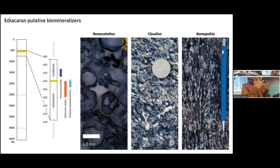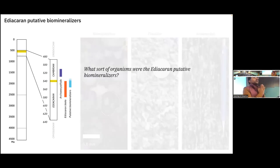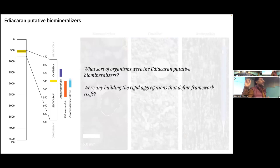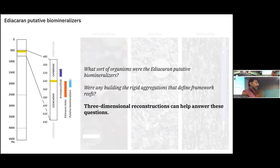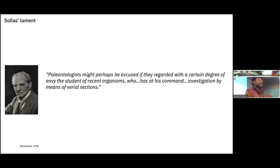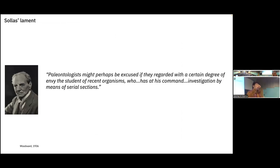I'm going to start with the set of questions I want to answer. First, what sort of organisms were these Ediacaran putative biomineralizers — what were their biological affinities and what were they doing in the environments where they're found? Second, were they actually building the rigid frameworks I'm after? To answer both questions, I'm going to argue that morphological analyses are required, specifically morphological analyses done on three-dimensional reconstructions. To make this point, I'll tell a story about William Sollas, a geologist at Oxford around the turn of the century.